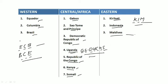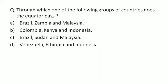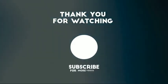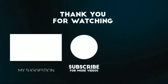Now try this practice question: through which one of the following groups of countries does the equator pass? Options: Brazil, Zambia and Malaysia; Colombia, Kenya and Indonesia; Brazil, Sudan and Malaysia; Venezuela, Ethiopia and Indonesia. Put your answer in the comments. Thank you.